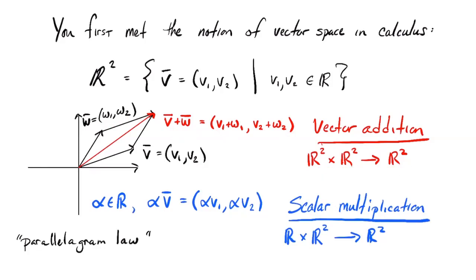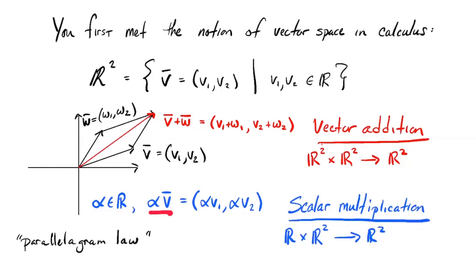In calculus there's a second operation on vectors, although it doesn't take two vectors and produce a vector like vector addition does. It takes a number — in linear algebra, numbers are usually called scalars — so it takes a real number in this case, or in general any element of our field, and combines that with a vector. I'm writing it as taking something in R and something in R² to produce something in R². If the real number is called alpha — I like to denote scalars by Greek letters — then the scalar multiple alpha V is V's first coordinate times alpha and V's second coordinate times alpha.